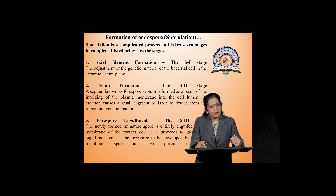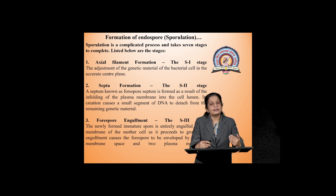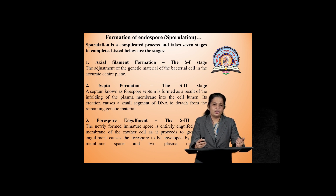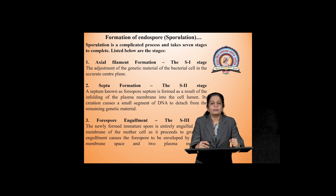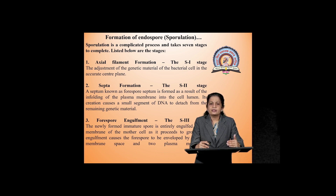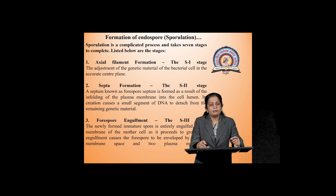This septum formation takes place due to folding of the plasma membrane inside the cell. The cell membrane goes inside the cell lumen and as a result a septum develops. Because of this septum development, the DNA detaches from the remaining genetic material — two copies of DNA are formed and they detach from each other. The third step is forespore engulfment. This newly formed immature spore is entirely engulfed by the membrane of the mother cell, and this engulfment causes the forespore to be enveloped by the inner membrane, forming the forespore inter-membrane space between the two plasma membranes.